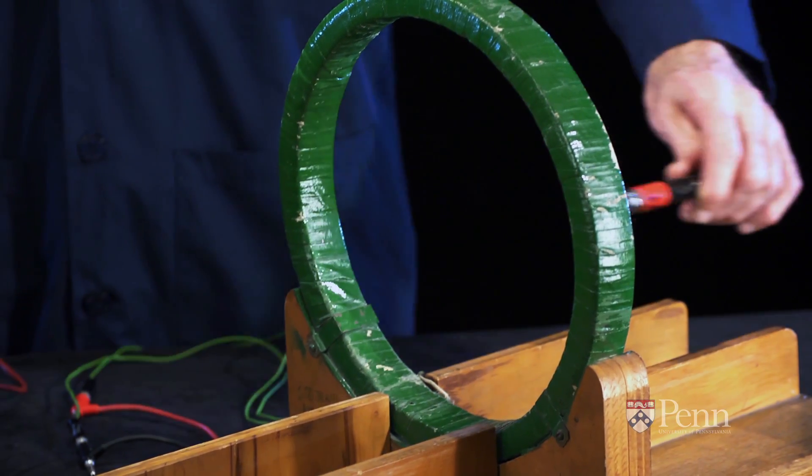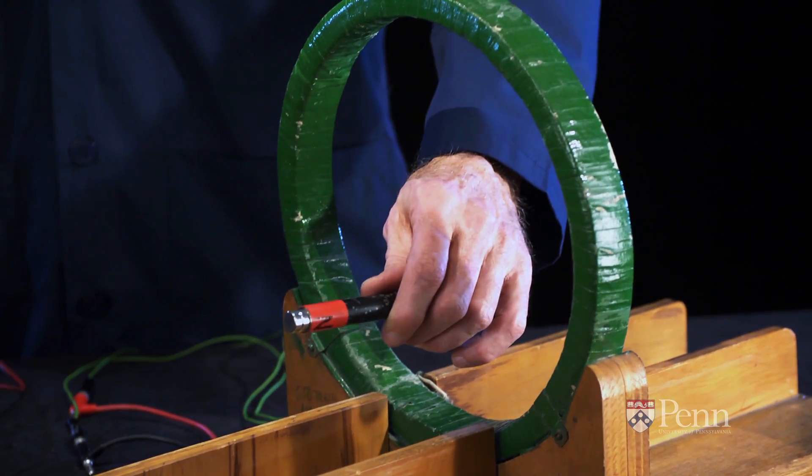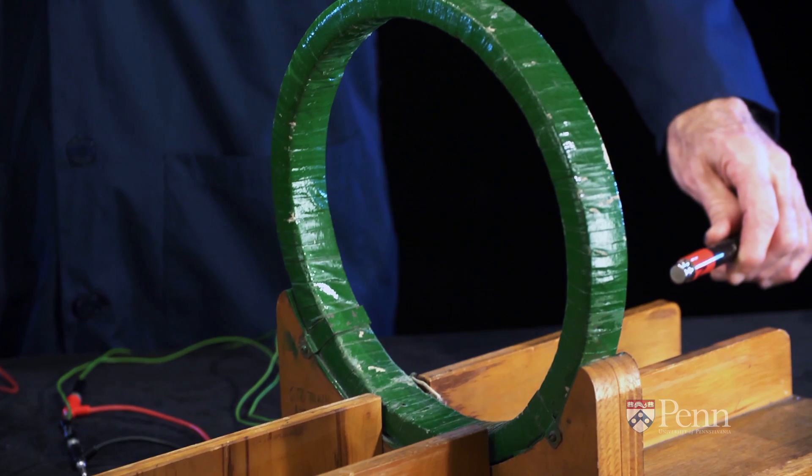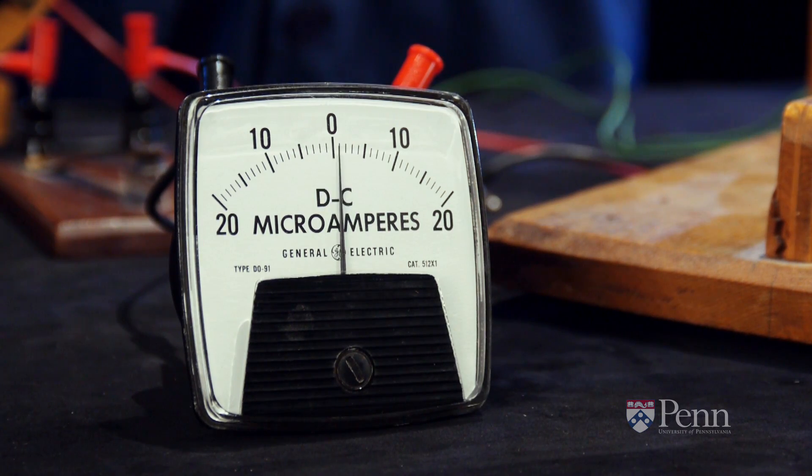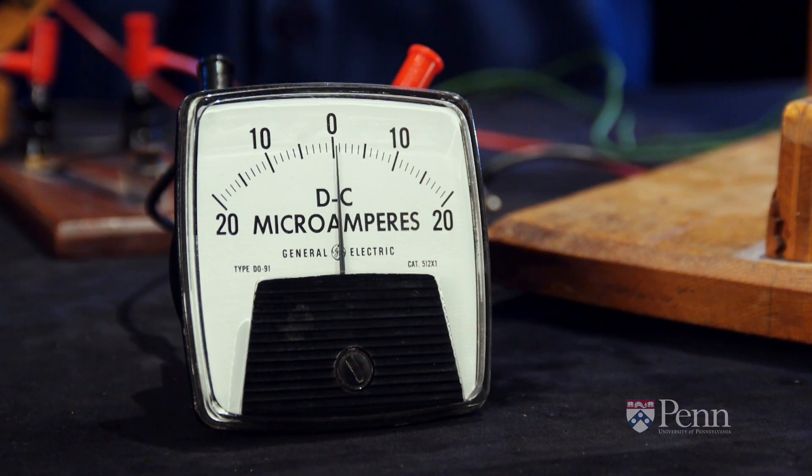So this is the reason that when I move a magnet in and out of an electric coil, I see my meter change directions and show me electricity moving first in one direction and then in the other.